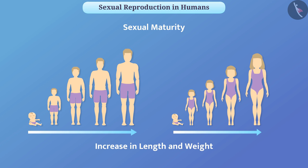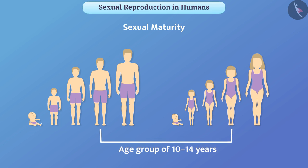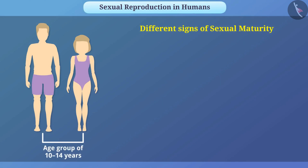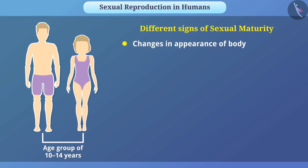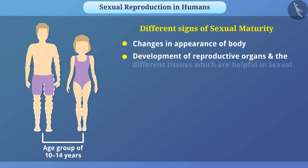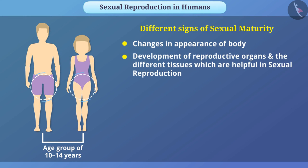These are only physical changes. In the context of sexual maturity, boys and girls undergo various changes in the age group of 10 to 14 years — for example, appearance of body, development of reproductive organs, and the different tissues which are helpful in sexual reproduction.